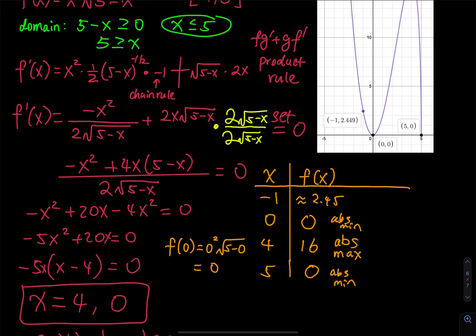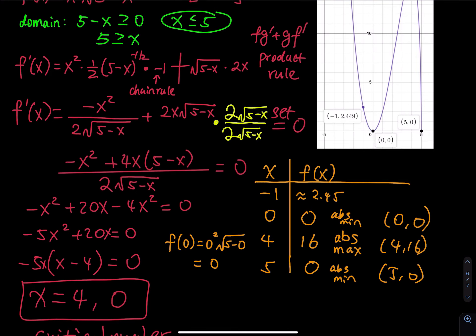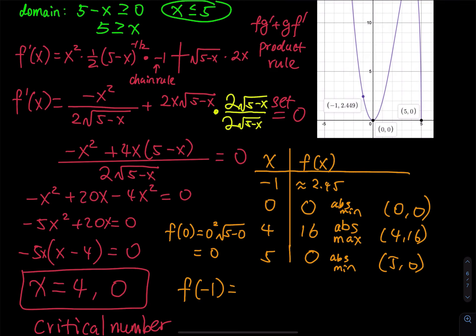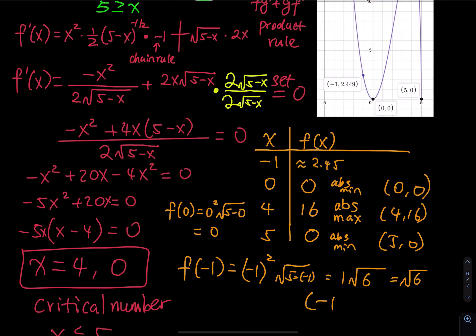When reporting to an online homework system, give the exact answers. For x equals negative 1: f of negative 1 equals negative 1 squared times square root of 5 minus negative 1, which is 1 times square root of 6, so root 6. Report negative 1 comma root 6 — do not report the approximation 2.45, as the system may not accept approximations.